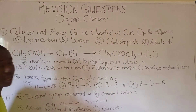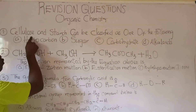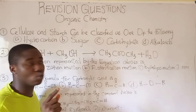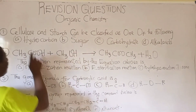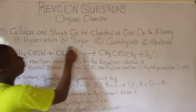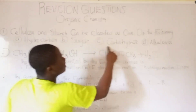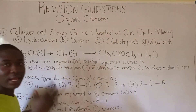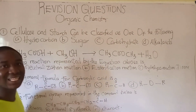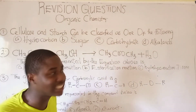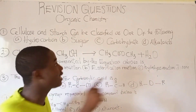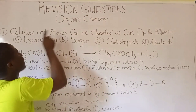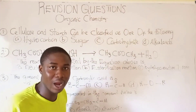The first question says: cellulose and starch can be classified as one of the following — A. Hydrocarbon, B. Sugar, C. Carbohydrate, D. Alkaloid. It must be noted that cellulose and starch are classified under carbohydrates. That is the answer.